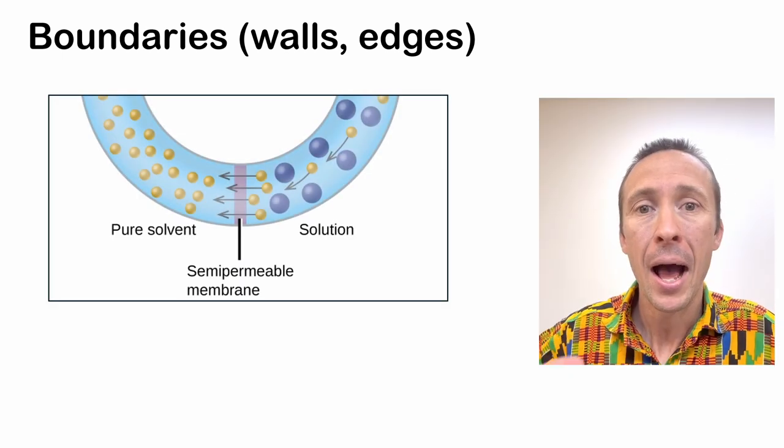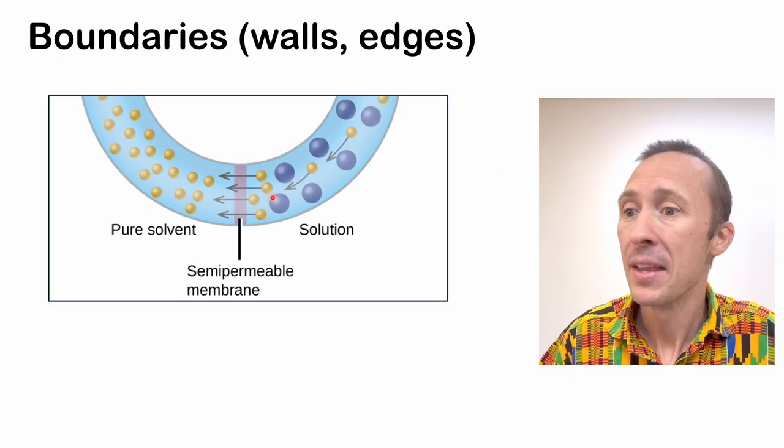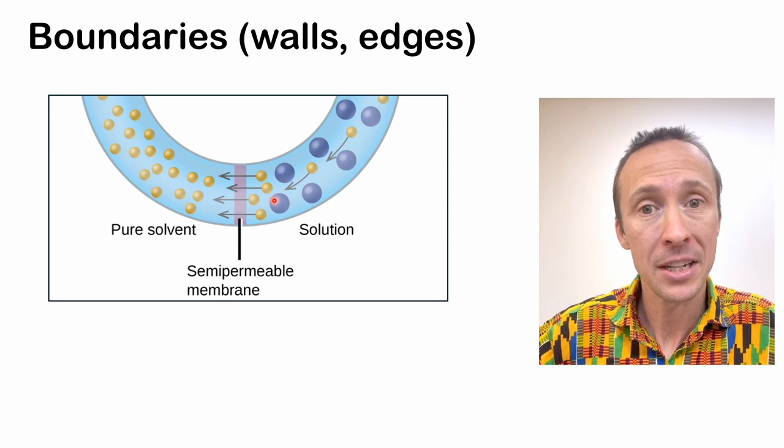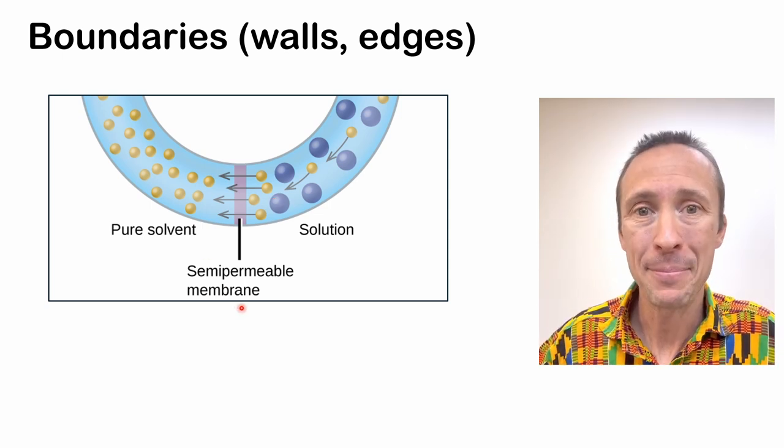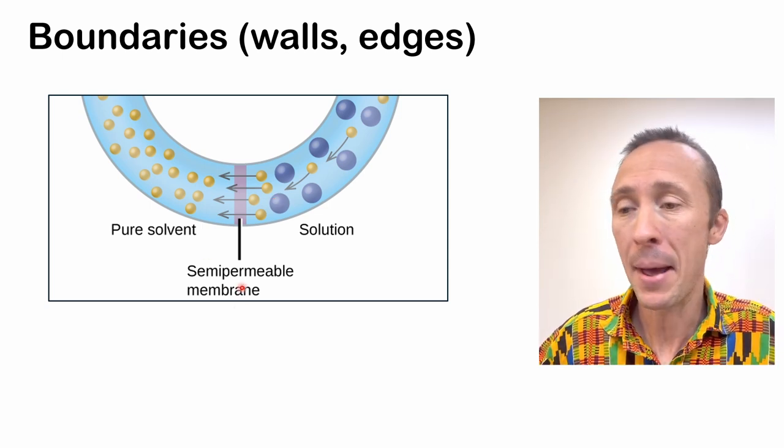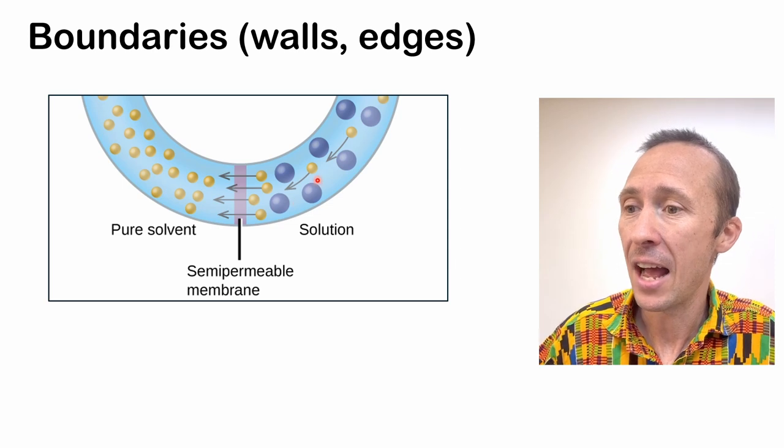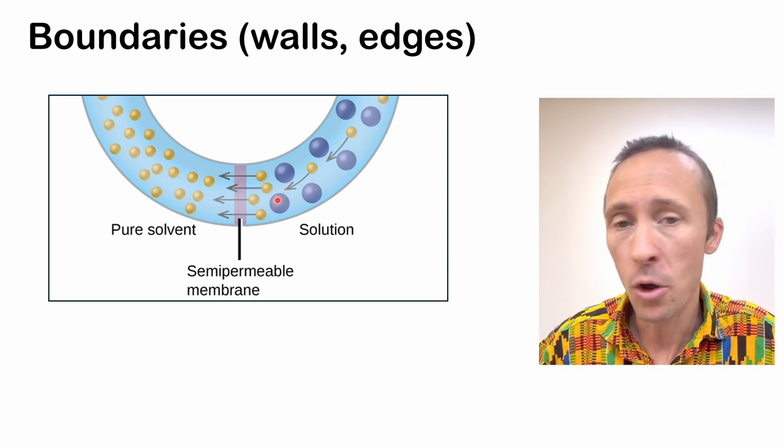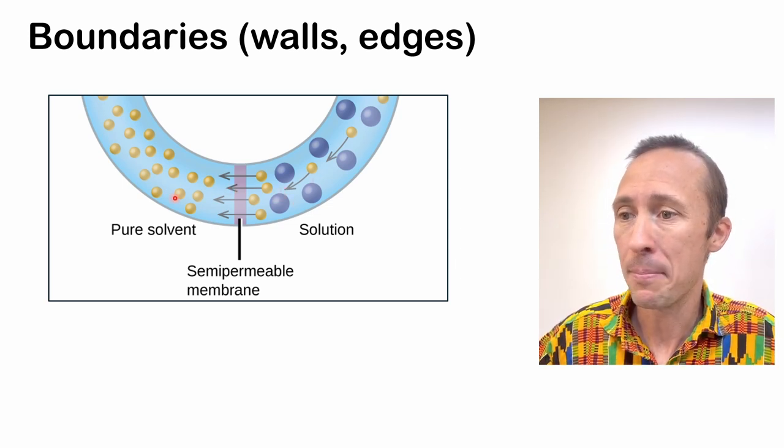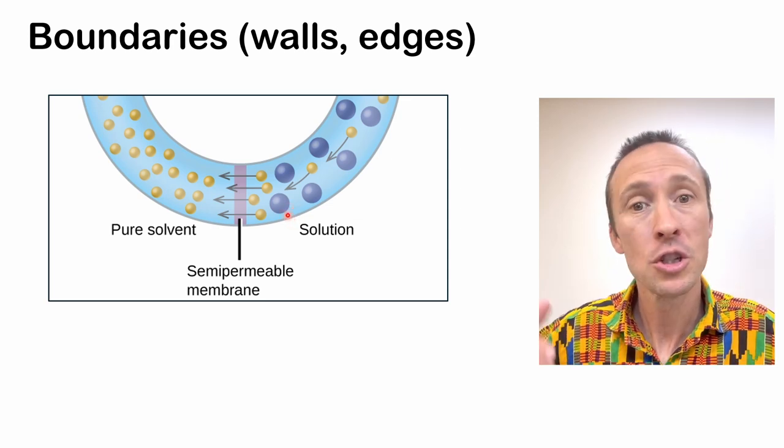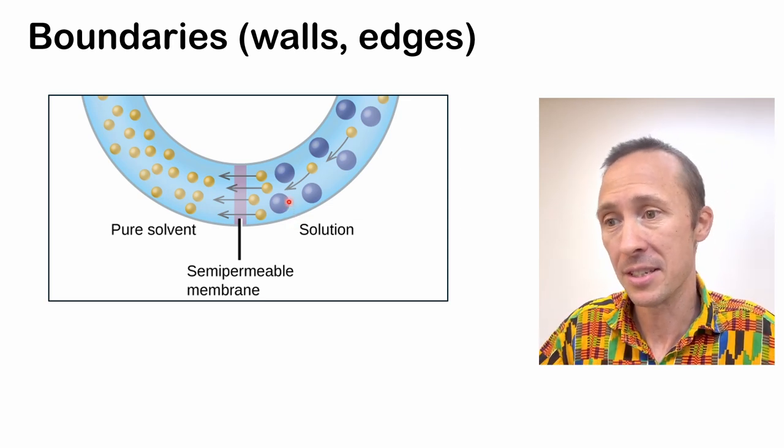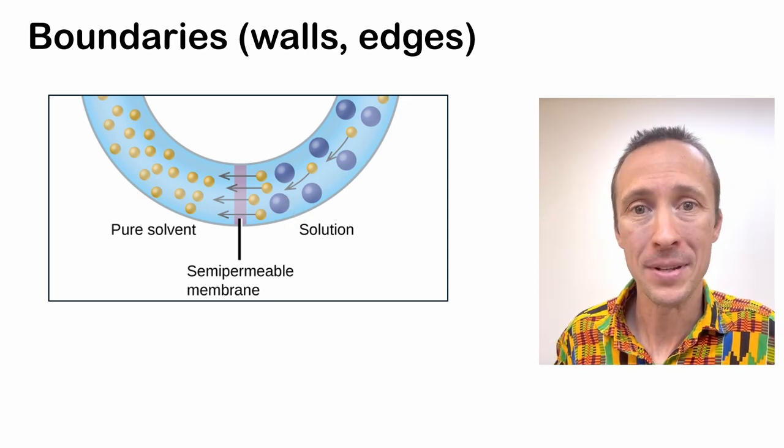Now, a boundary that is semipermeable allows for matter to be exchanged with the surroundings. For example, if we have a semipermeable membrane here, this allows the smaller yellow balls, the solvent molecules to pass through the boundary, but not the larger solute molecules here. So this is an example of an open system.